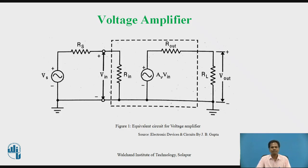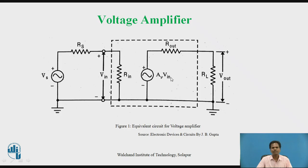The first type of amplifier is the voltage amplifier. This figure shows the equivalent circuit for a voltage amplifier, in which the amplifier is designed to amplify a voltage signal — input voltage signal — and the output is an amplified voltage signal. This voltage amplifier is just like a voltage-controlled voltage source. In this amplifier, it is required to have high input impedance and low output impedance.